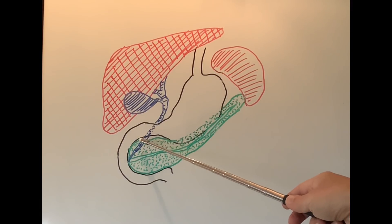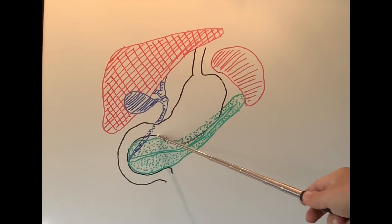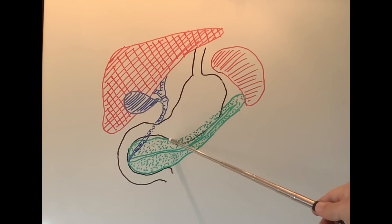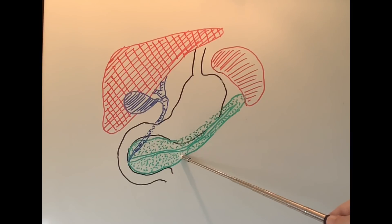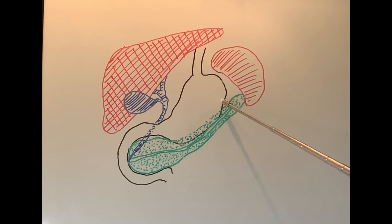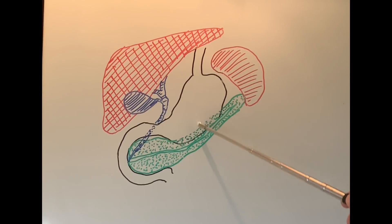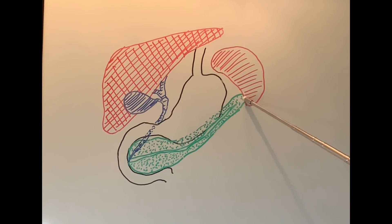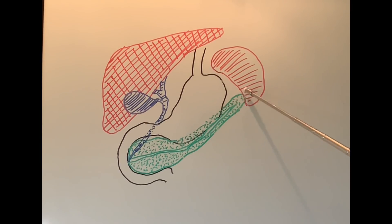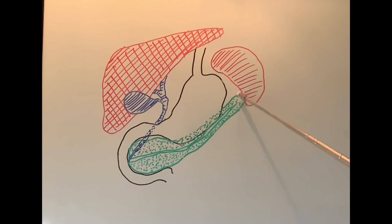The bulkiest part of the pancreas which lies in the C is the head of the pancreas. This is the neck of the pancreas, which is the narrow part. Then the body of the pancreas lies behind the stomach — the stomach is literally sitting on it — and the last bit of the pancreas, which is like the tail of a snake, is the tail of the pancreas, and this is tucked inside the structure called the spleen.